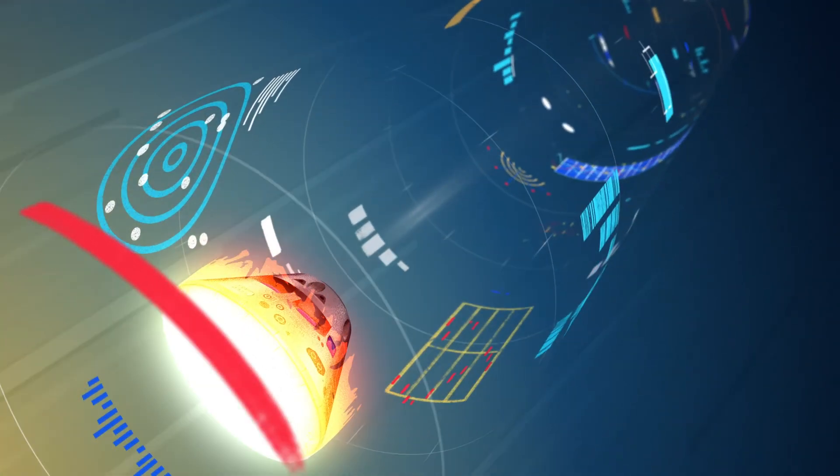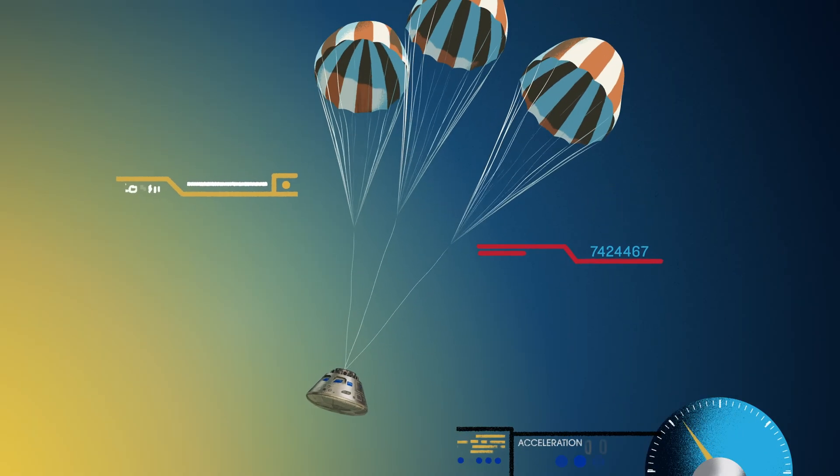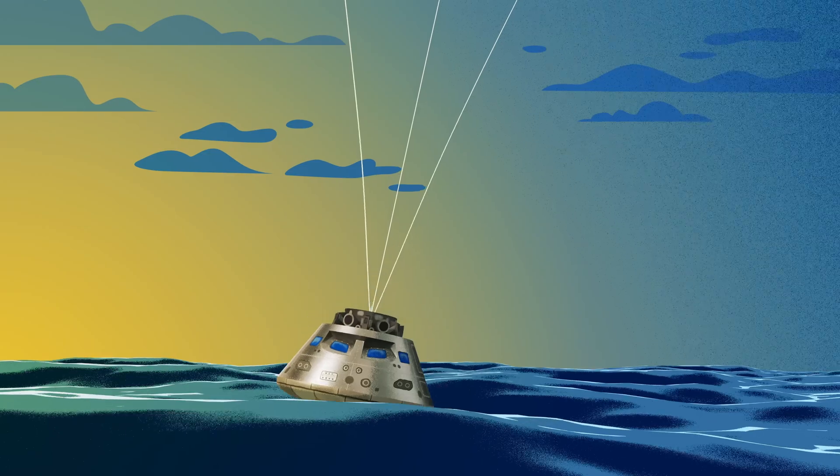With the Orion now at just 300 miles per hour, a series of parachutes uniquely tested and produced for this moment deploy, decelerating the craft to just 20 miles per hour for splashdown.